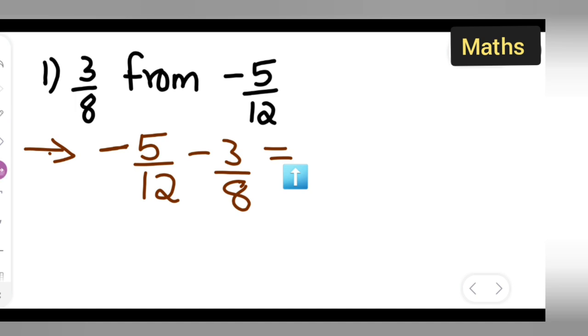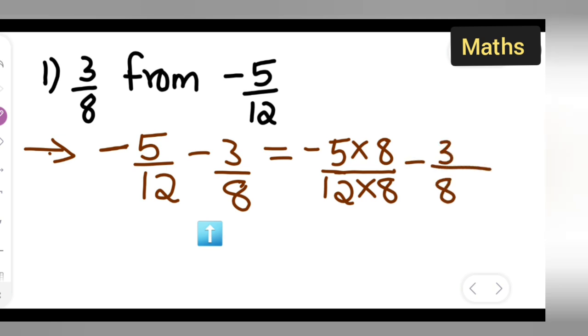We cannot directly subtract this because the denominators are different. So we have to cross multiply. -5/12 I am going to multiply 8 with this and -3/8 I am going to multiply with 12. So I can multiply this with 8, both numerator as well as denominator.